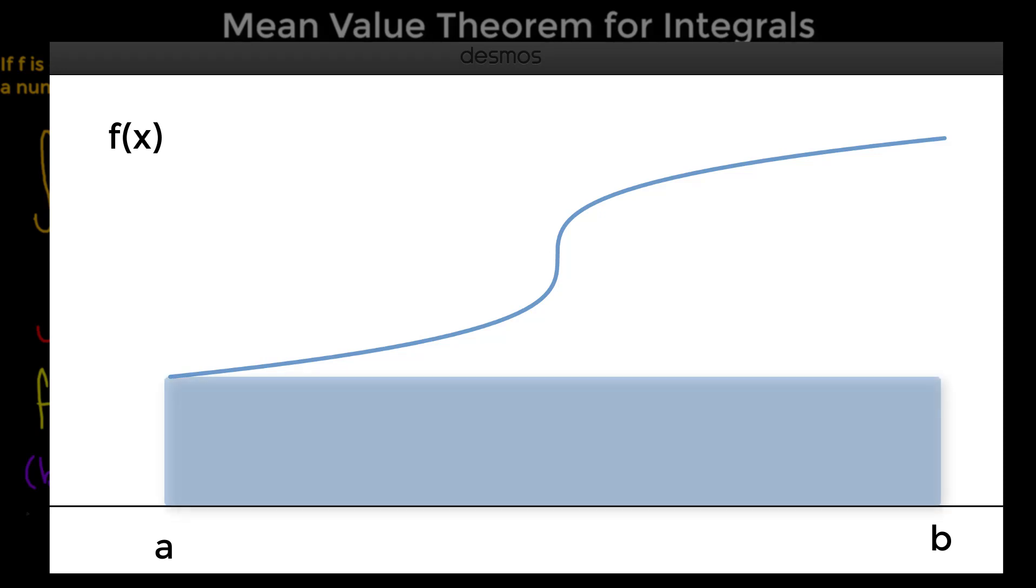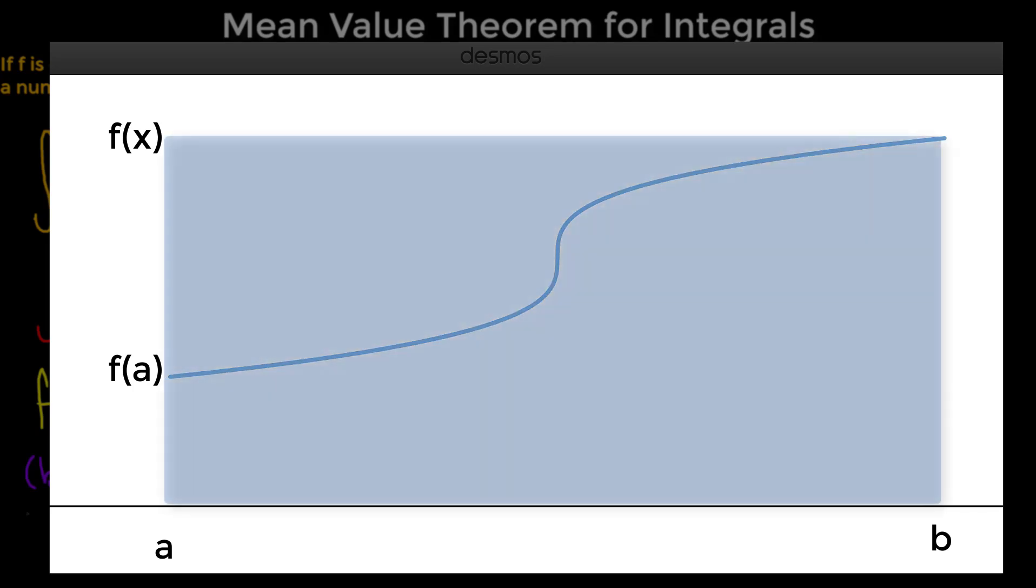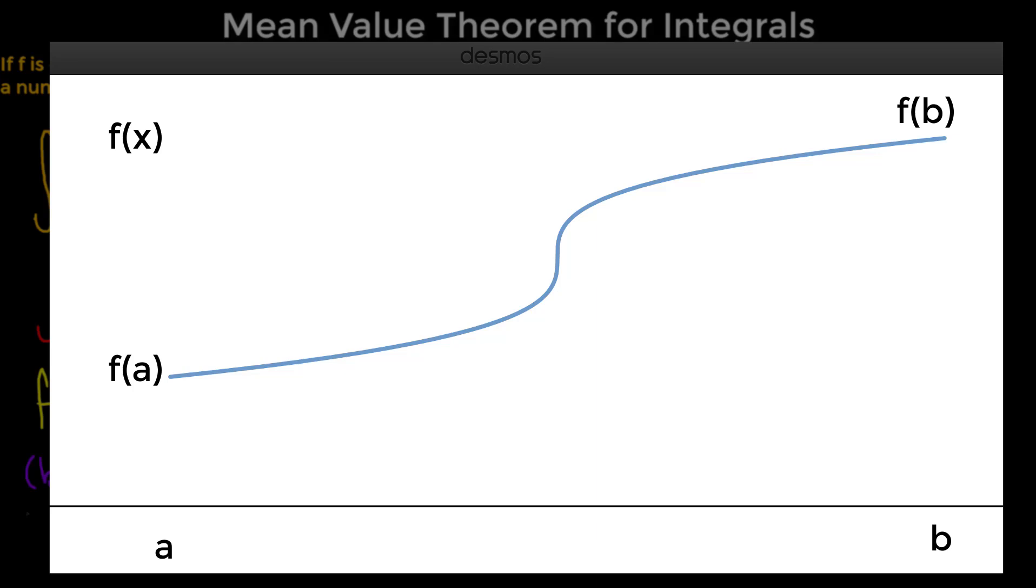So, using a left rectangle based on f at a would be an under approximation in this case. And moreover, we would see that a right rectangle based on f at b would be an over approximation. And so there must be some f of c that we can make a rectangle out of that will equal the definite integral from a to b of f of x dx, such as the one that we have here.